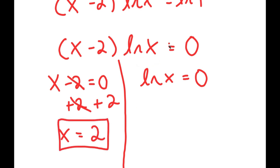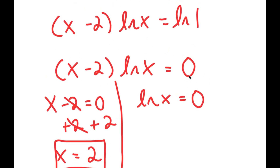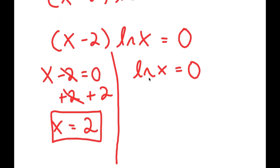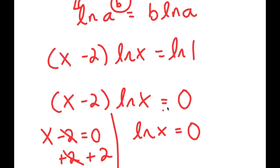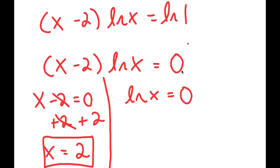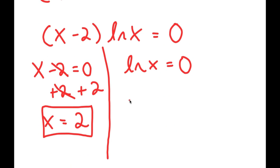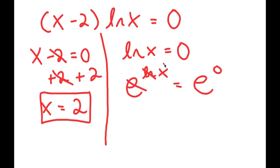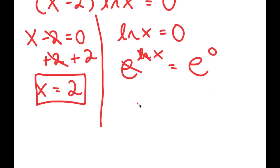For my second equation, I have ln x equals 0. This is basically asking: ln of what equals 0? We know ln of 1 equals 0, but if we didn't, we can take e to the power of both sides. So e to the power of ln x equals e to the power of 0. The e and ln cancel out, giving x equals e to the power of 0, which is 1.